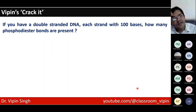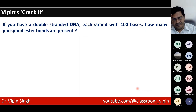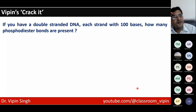So just to get you started — tell me this answer: if you have a double-stranded DNA, each strand with 100 bases, how many phosphodiester bonds are there? You have one minute to answer this.